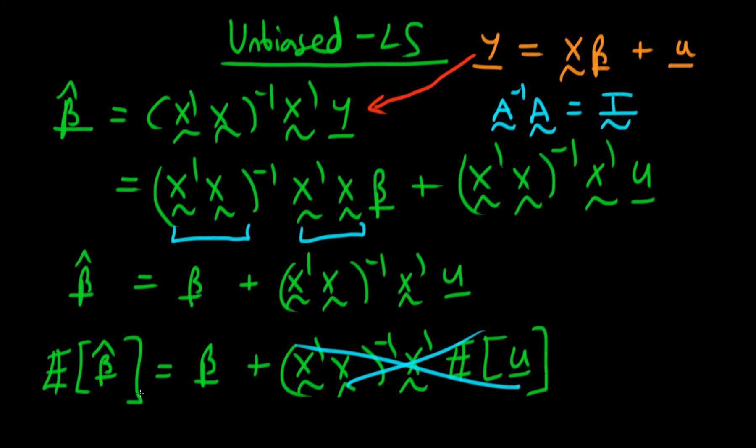So this second term disappears, and we're left with the expectation of beta hat equal to the true population parameter beta. We have proved that under the zero conditional mean of errors assumption, the least squares estimator beta hat is indeed unbiased. That means if I take repeated samples from my population and apply my least squares estimator to each, on average it gets the true population parameter beta right.